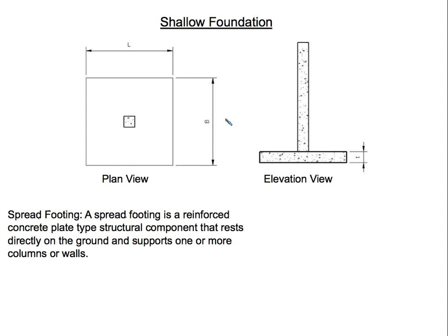If you increase the area of that point, the sword will be dull and won't penetrate as well. If you increase the area, you are decreasing the stress. And if you decrease the stress, the sword is not going to penetrate. It's the same thing when it comes to footings. Think of the column as a sword — it would penetrate the ground if there were no footing. What the footing does is spread that load out over enough area to decrease the stress that the soil sees.